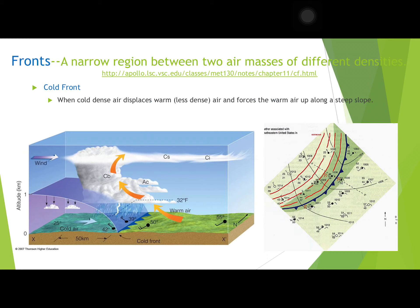The first one is a cold front. A cold front is when cold, dense air displaces warm, less dense air and forces the warm air up along a steep slope. Looking at this picture, we can see here's the cold air moving in this direction, and here's the warm air being pushed up because it's less dense — the cold air is pushing forward and squishing all this warm air upward.